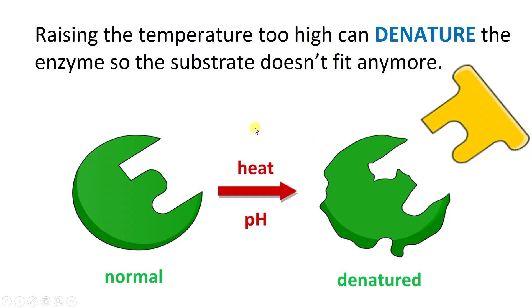The problem of raising the temperature too high though is that you can denature the enzyme so that the substrate doesn't fit anymore. So you can see here, this was the picture at the beginning. We have a normal enzyme that's ready to have its substrate here. It's got its active site, so it's specific to a substrate. As you heat it too much or if you have a pH that isn't optimum, this will denature the enzyme.